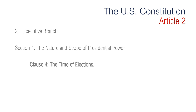Section 1, Clause 4 is regarding the time of elections. It says Congress may determine the time of choosing the electors and the day on which they shall give their votes, which day shall be the same throughout the United States. Congress set the Tuesday after the first Monday in November, every fourth year, as the date for choosing electors. The electors cast their votes on the Monday after the second Wednesday in December of that year.